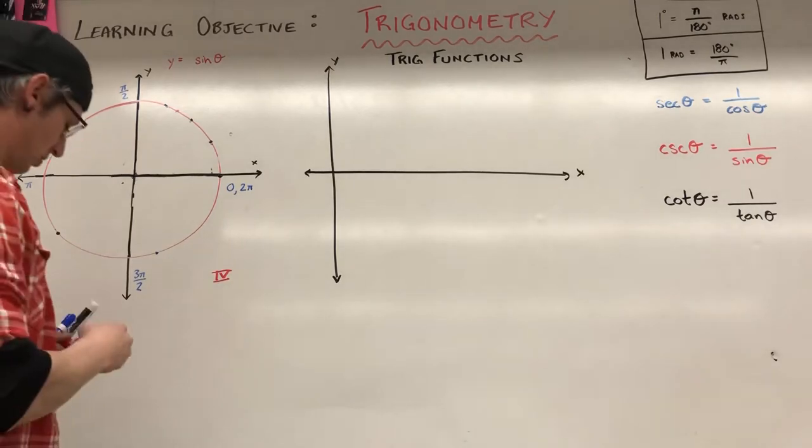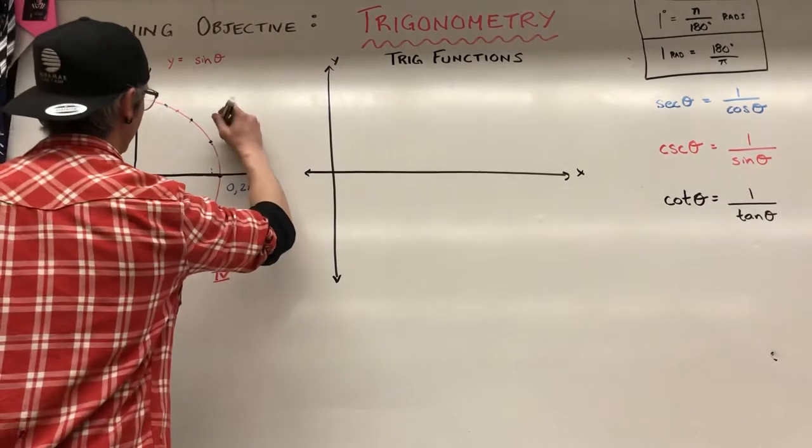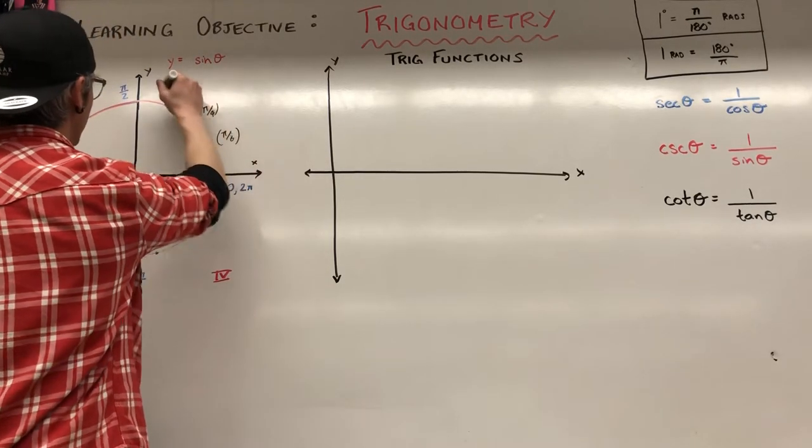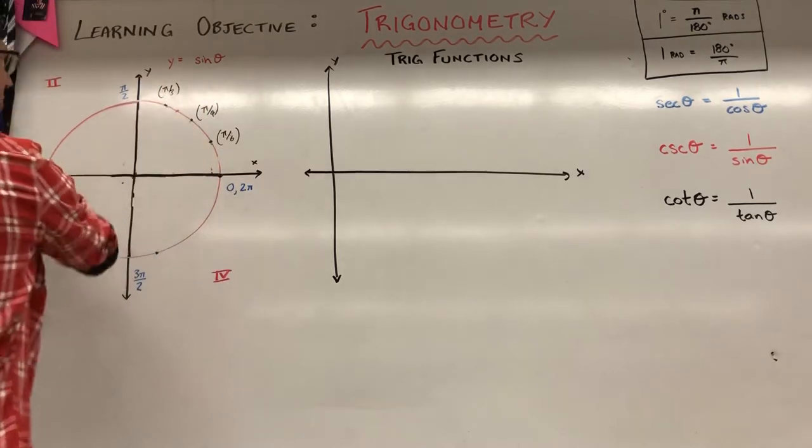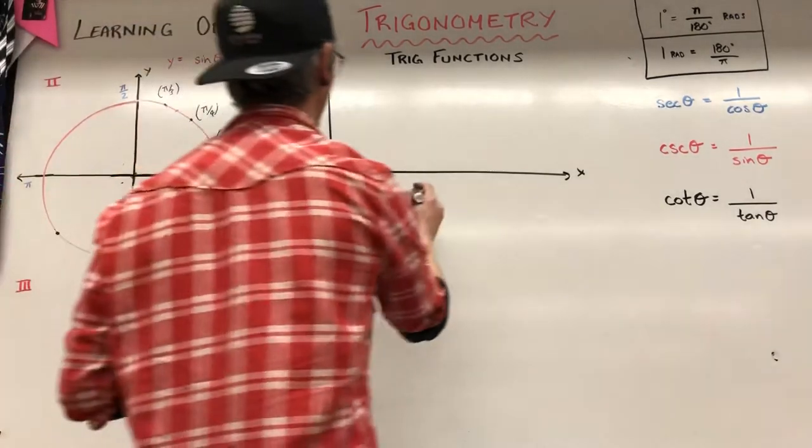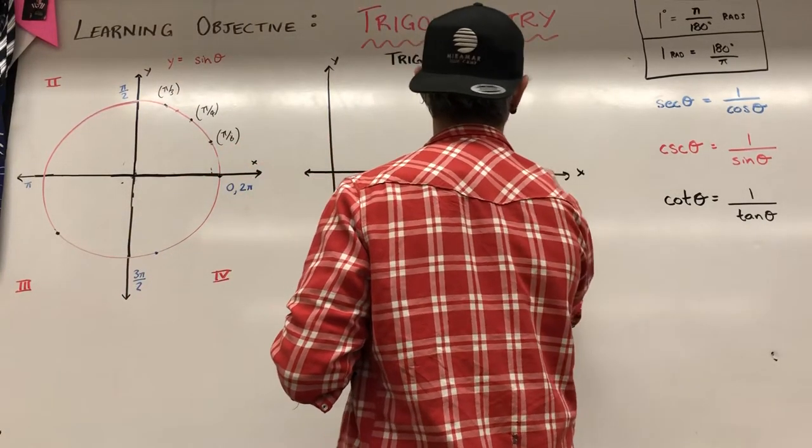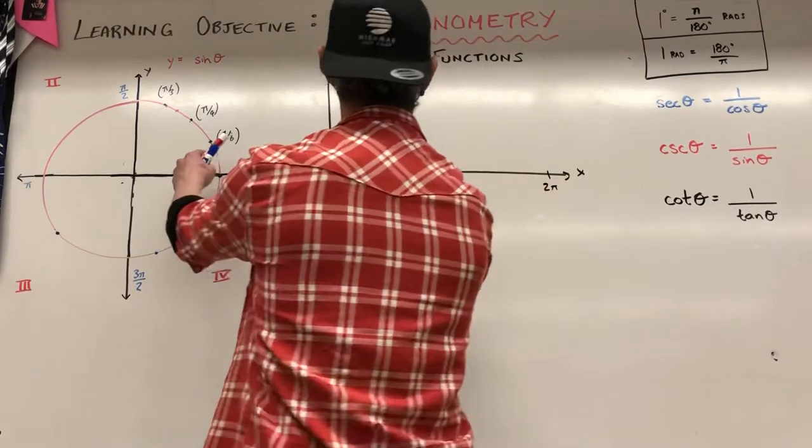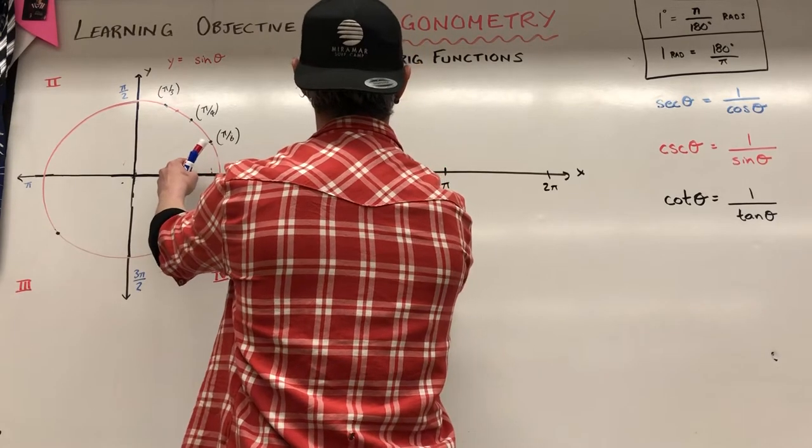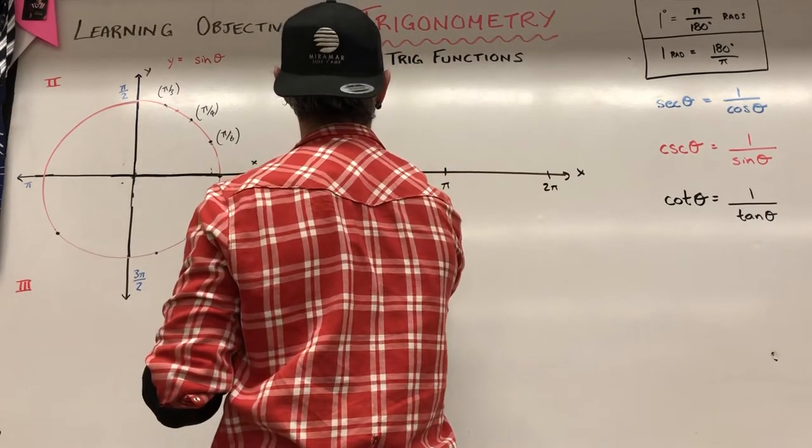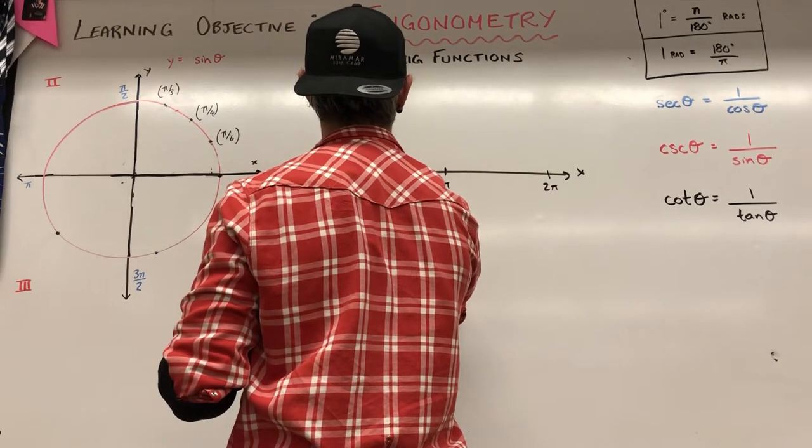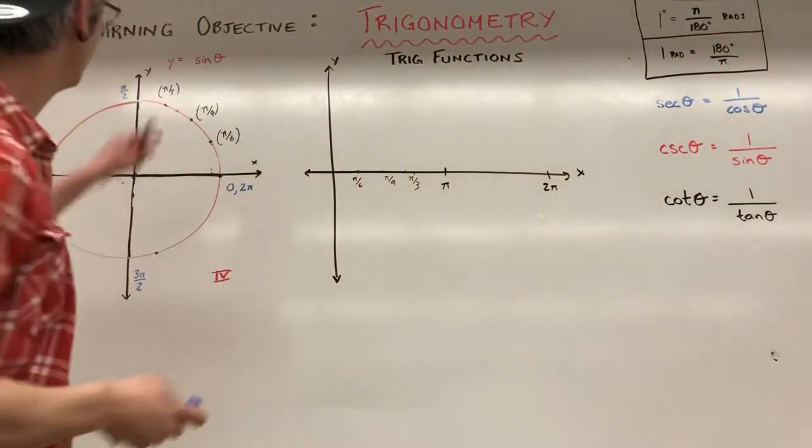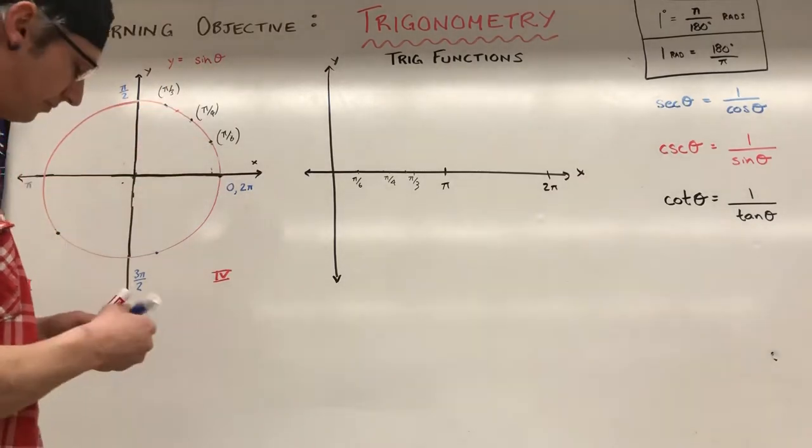It's going to be a function of x here. So we know that we've got some points along the way. I've got pi over six, pi over four. These are angles, right? Pi over three. And it keeps going all the way around to pi, to three pi over two. So I'm going to put the middle of my graph is going to be pi. It goes all the way to two pi. And I've got a few points along the way here, pi over six, pi over four and pi over three. So let's start graphing what the value of sine of theta is as we move around.